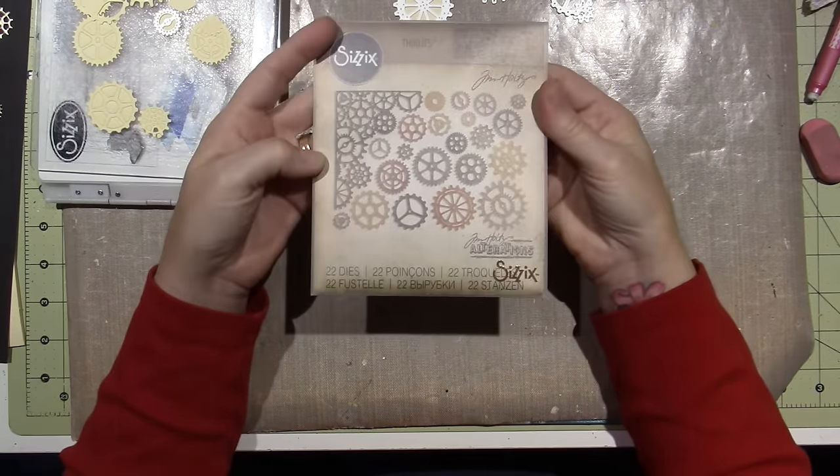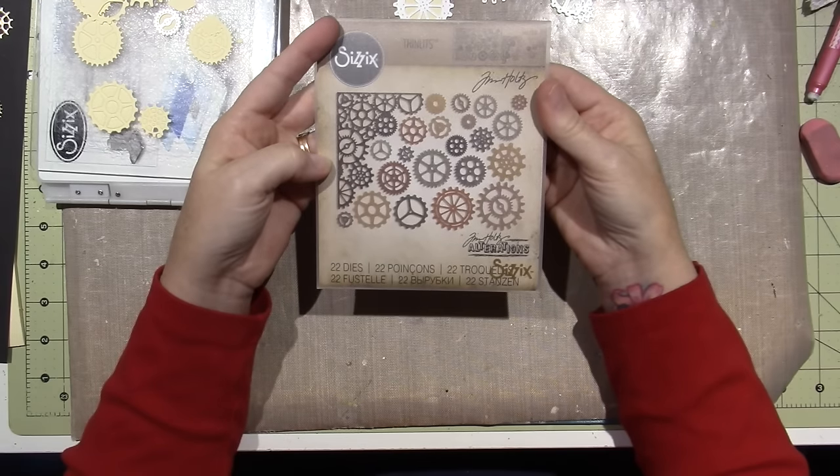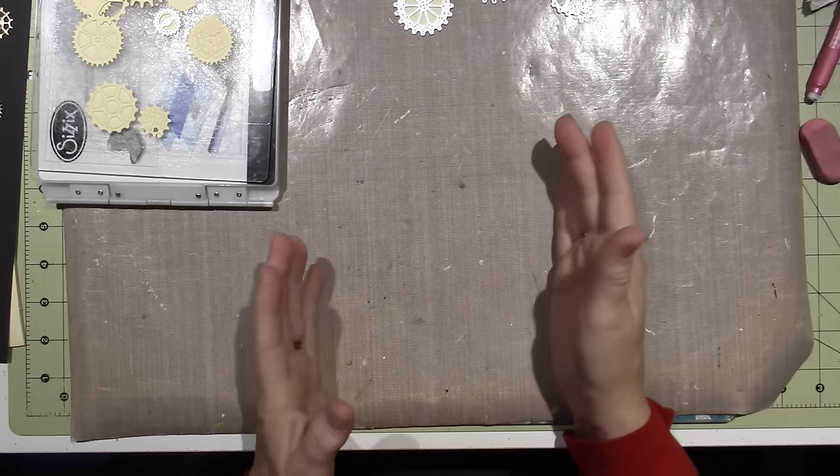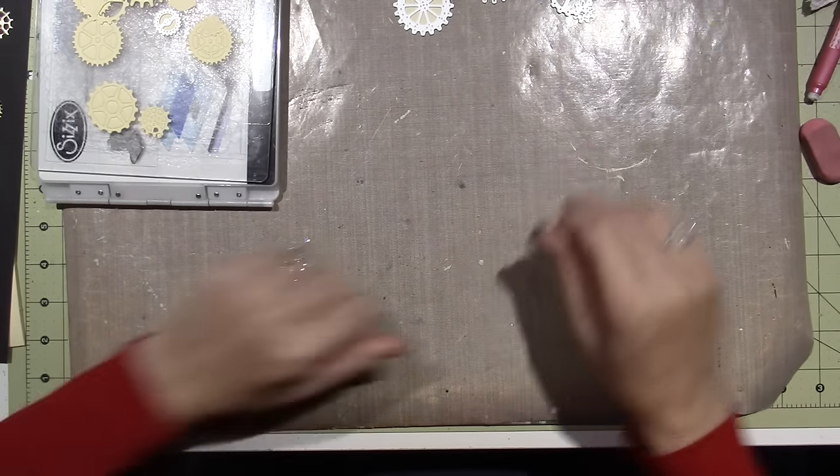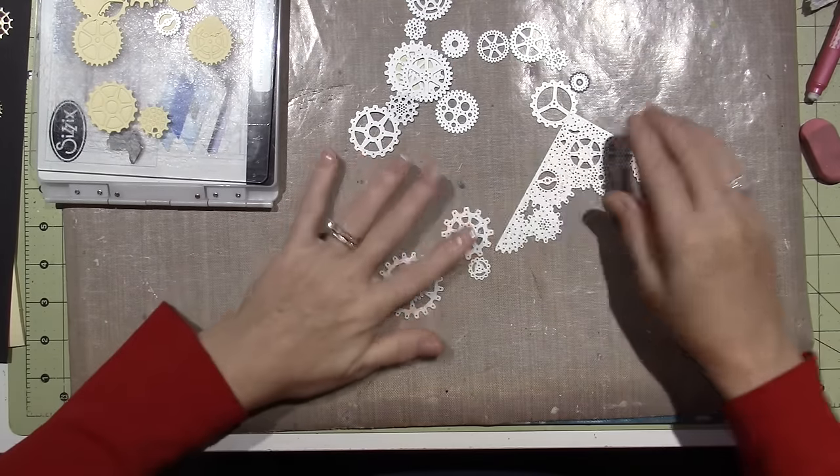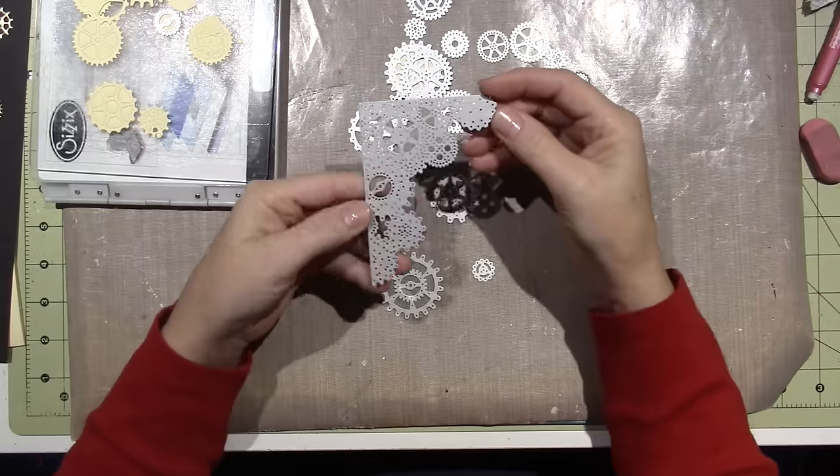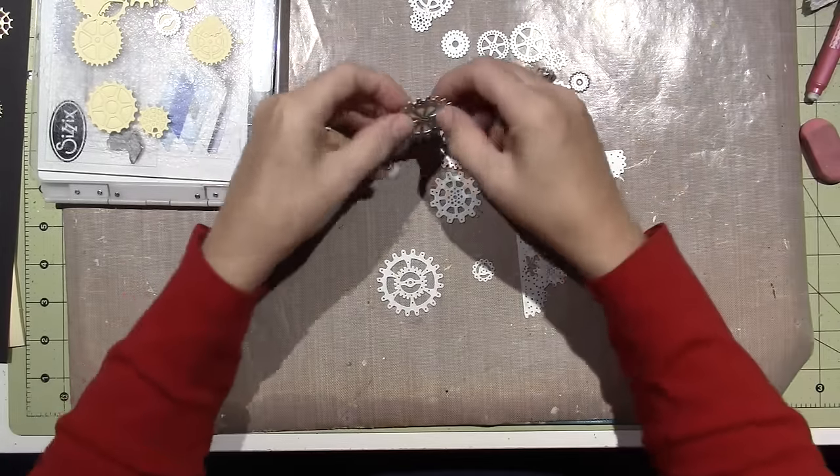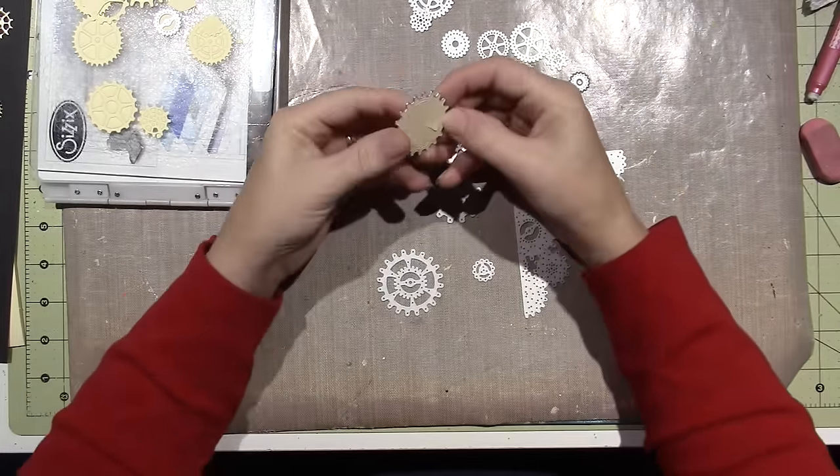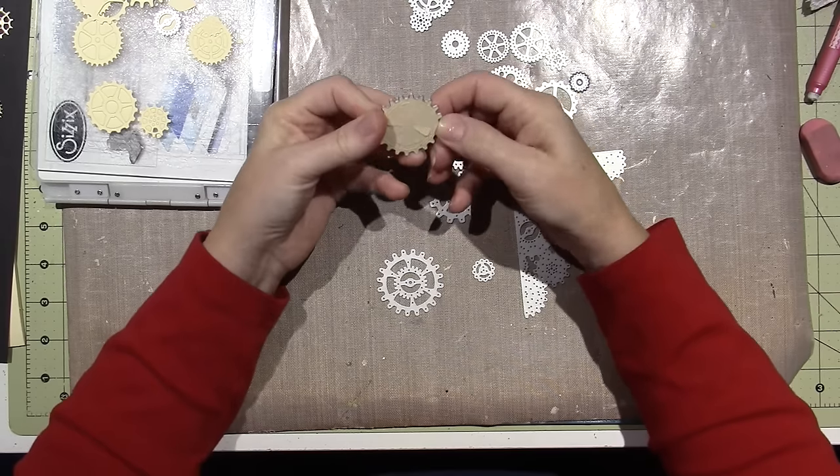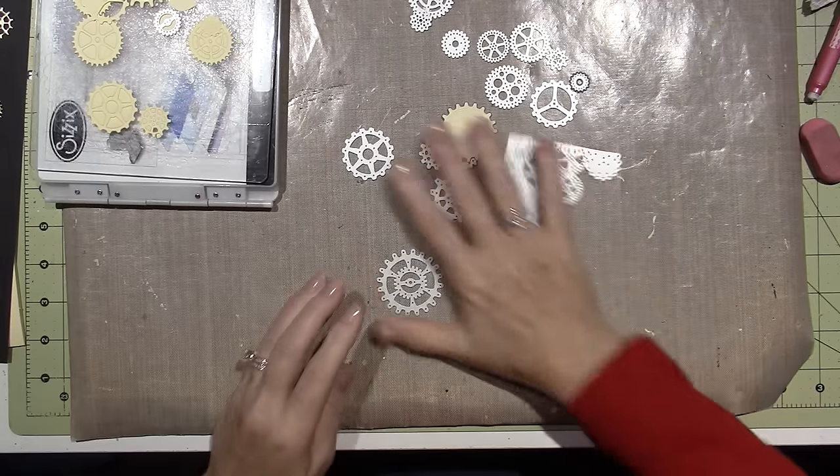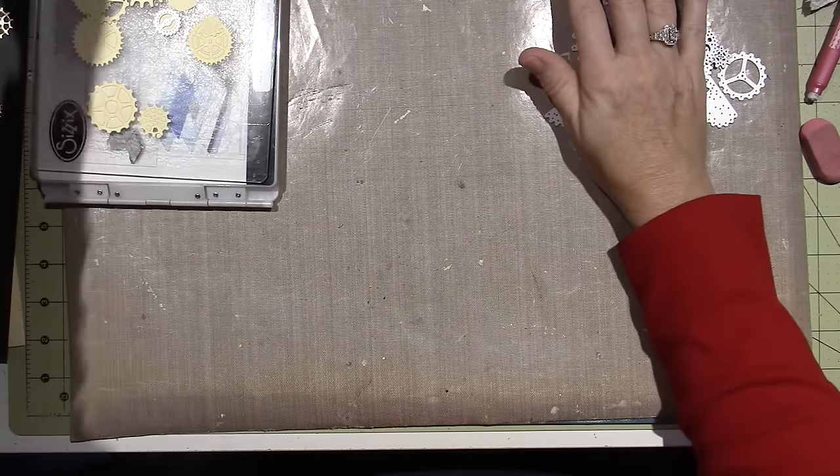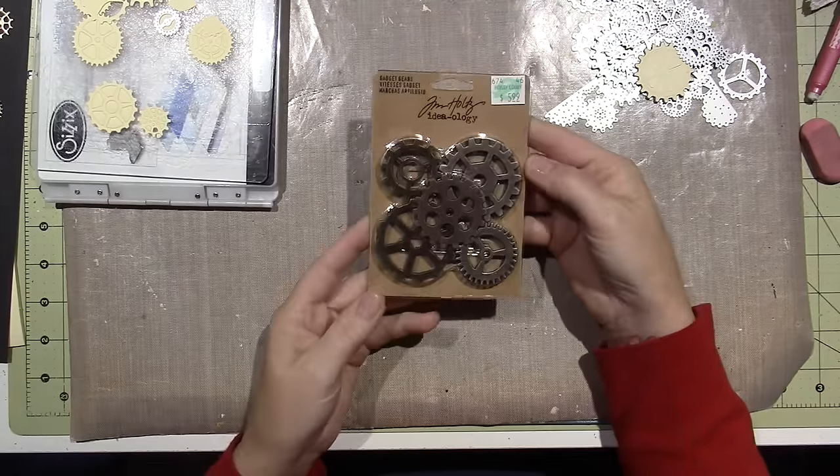And there's 22 dies in here, and I got it at Hobby Lobby for like seven bucks. Here's all the dies. You get this nice corner piece, which I've already done. There's lots of good different sizes in here. That's what I liked about it.